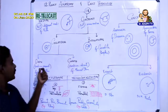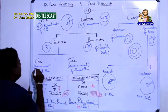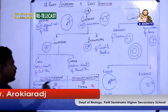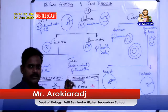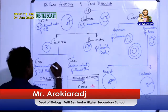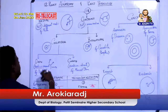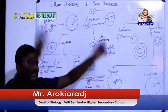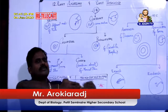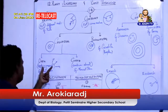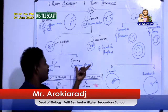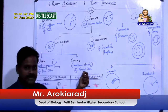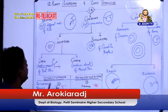Collateral vascular bundles are further classified as open or closed based on the presence of cambium. If cambium is present, it is called open — cambium is responsible for secondary growth and introduction of new cells. If cambium is absent, it is called closed — no new cells are introduced. Example for open type is dicot stem; example for closed type is monocot stem.